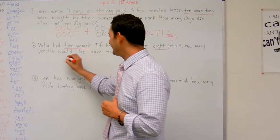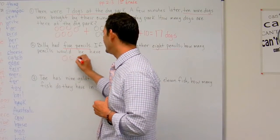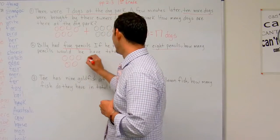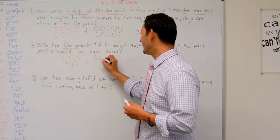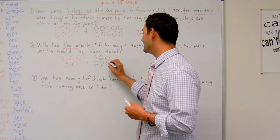Let's see. So he had 5 pencils: 1, 2, 3, 4, 5. Plus he had 8 pencils: 1, 2, 3, 4, 5, 6, 7, 8.